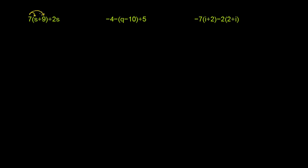So we want to distribute the 7. It becomes 7 times s, which is 7s, plus 7 times 9, which is 63. And so that's this part right over here. And then we have the plus 2s.